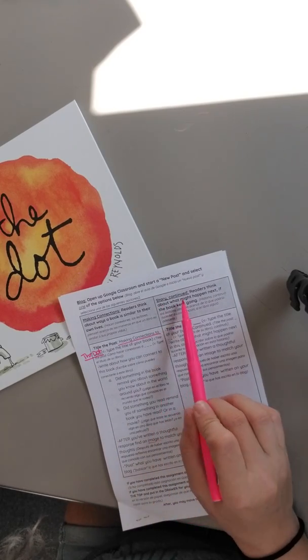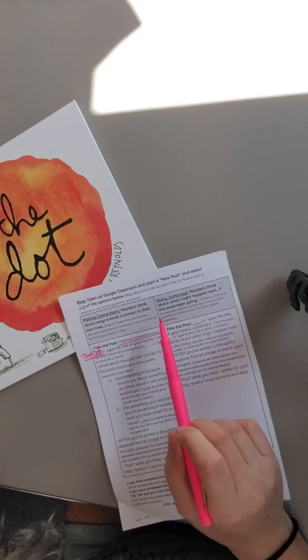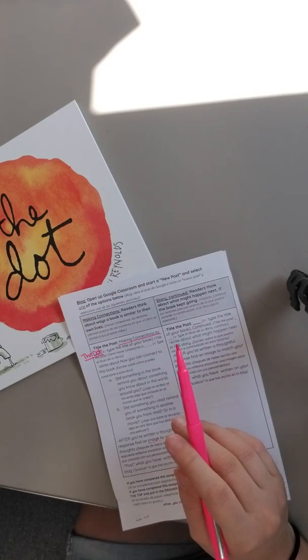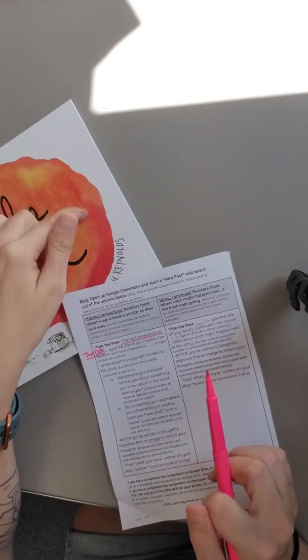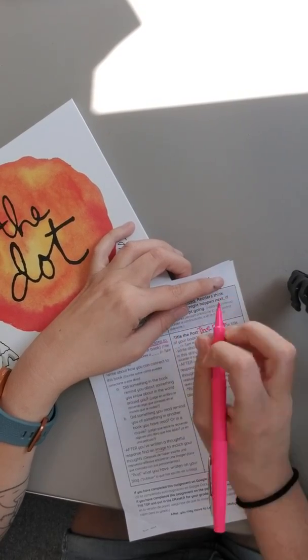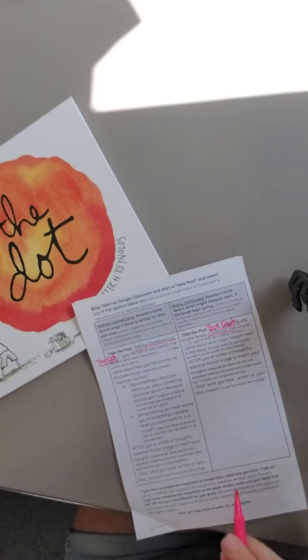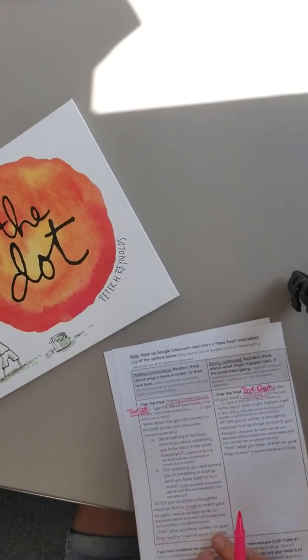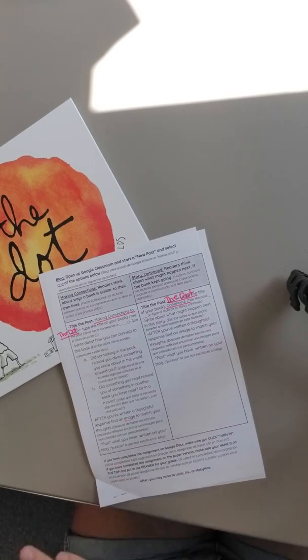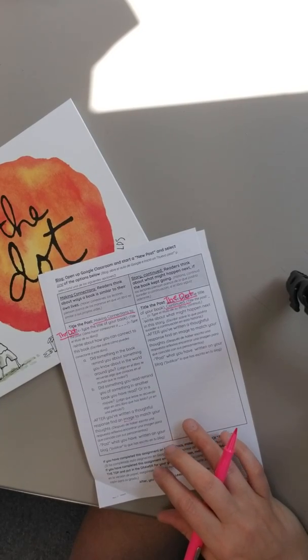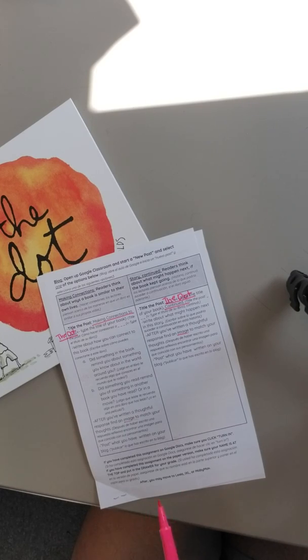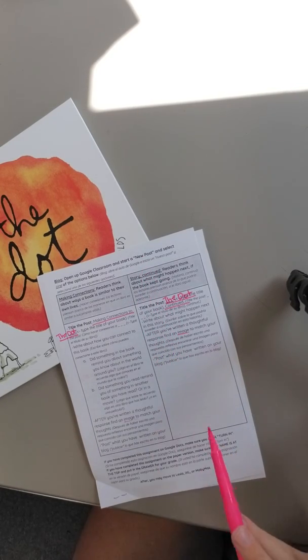Or maybe you don't want to do that. Maybe you want to do story continued. So readers think about what might happen next if the book were to keep going. For this one, you would go into your Google Classroom and at the top where it says share your thought with your class, you're going to click there and that's where you'll start typing. You would type the dot continued. That's what you first type and then you're going to write about what might happen next in the story. So at the end of the story, she had the little boy sign his drawing. What do you think would be the next thing that would happen? Write a sentence about what happens next after that and then you can look for a picture on Google, on the image search. You can copy and paste that into your post and then click post.